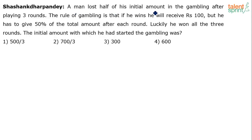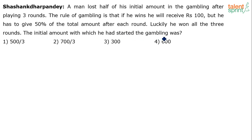A man lost half of his initial amount in gambling after playing three rounds. The rule of gambling is that if he wins, he will receive 100 rupees. But he has to give 50% of the total amount after each round. Luckily, he won all three rounds. The question asks: what was the initial amount with which he started?